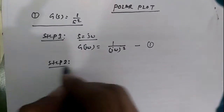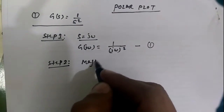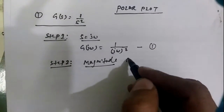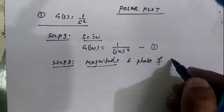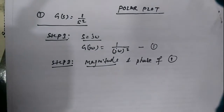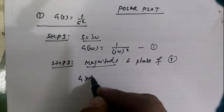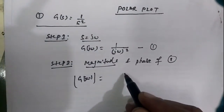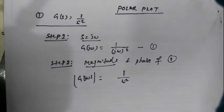Step 2: We find the magnitude as well as the phase of equation 1, the given transfer function. The magnitude of G(jω) will be equal to 1/ω².